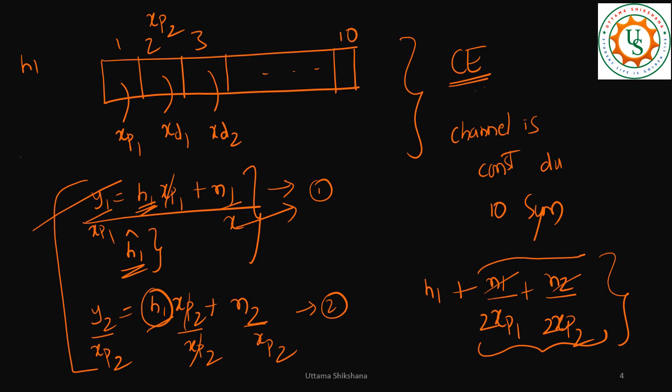You can say something like you are doing average - if you do average your noise gets reduced. Basically what I mean to say is if you are going to go for more number of training symbols then your channel estimation is better.